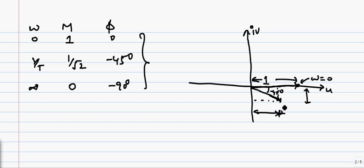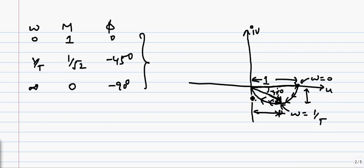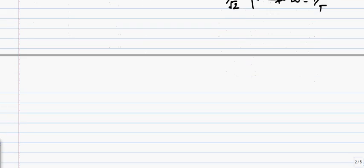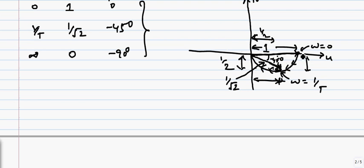If we plot for different values of ω and take the corresponding magnitude and phase, we get a plot in a semicircle form. We denote the direction of this plot as ω changes from 0 to infinity. At ω = 1/T, the imaginary value is −1/2 and the real value is 1/2, and the angle is −45°. The maximum imaginary value occurs at ω = 1/T.